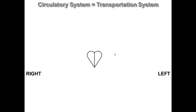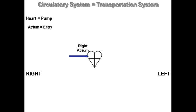The heart is basically a pump, and like any pump we have to first get liquid into the pump before it can be pumped out. Our heart has an upper chamber which we call the atria — atria is the plural, a-t-r-i-a; singular it is an atrium. Blood always enters through the atria, and in this case we have blood coming into the right atrium.